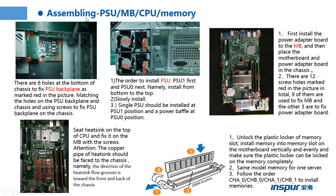This page shows the assembly of the PSU, motherboard, CPU, and memory. This component is the CPU fan — not the CPU itself — because the CPU and motherboard are integrated together and cannot be separated. There are 6 holes at the bottom of the chassis to fix the PSU backplane. We need to remove those 6 screws to remove the power board and the motherboard.